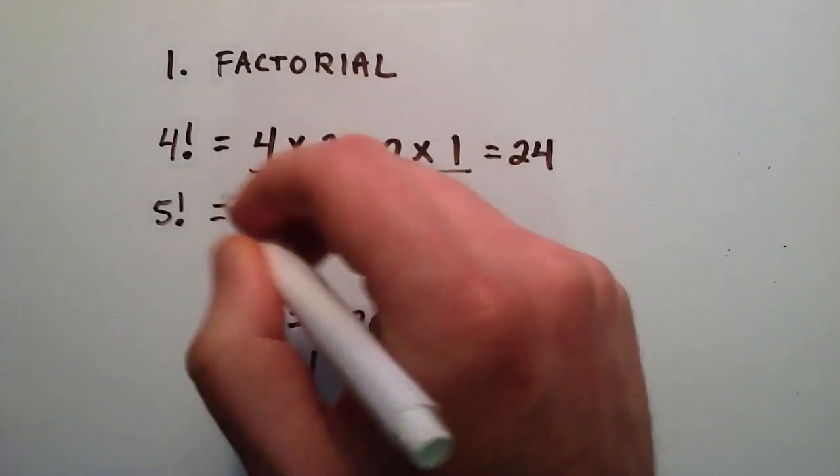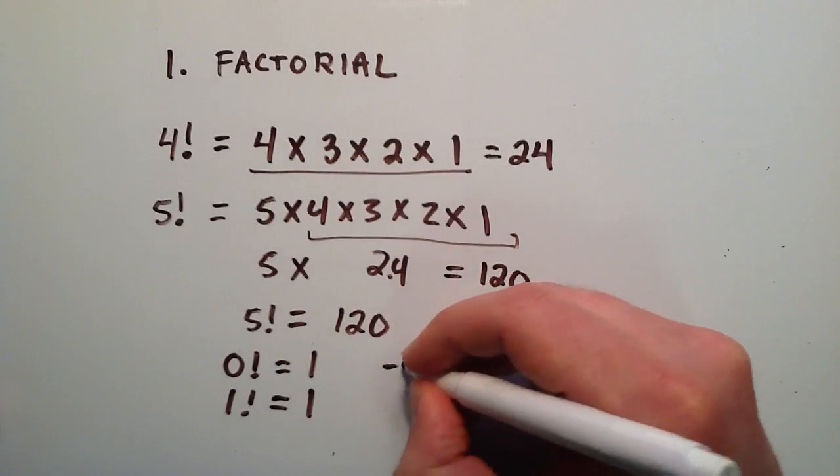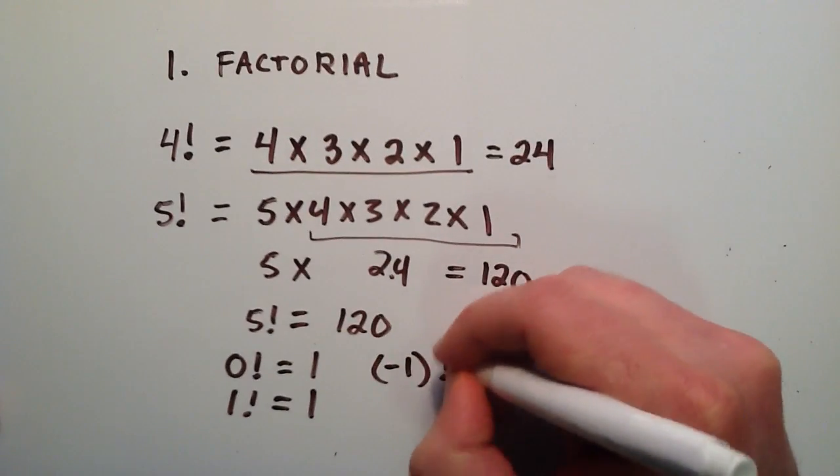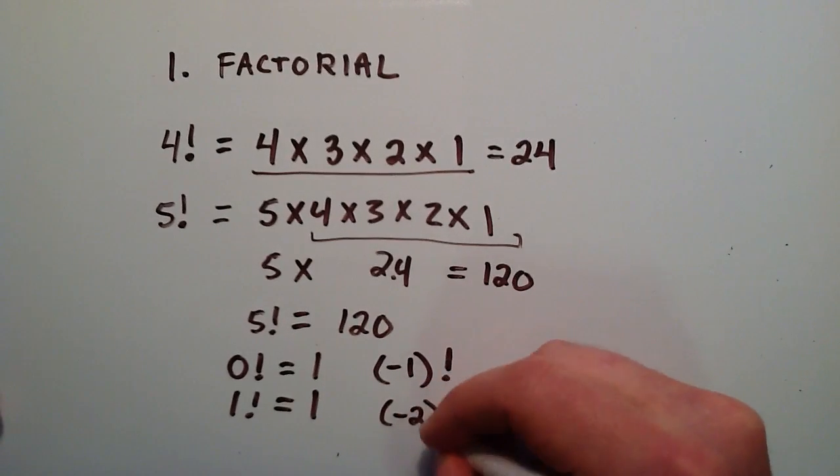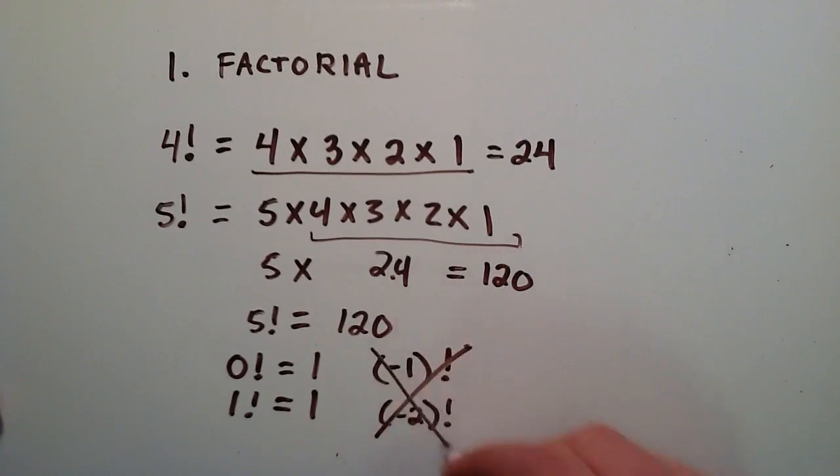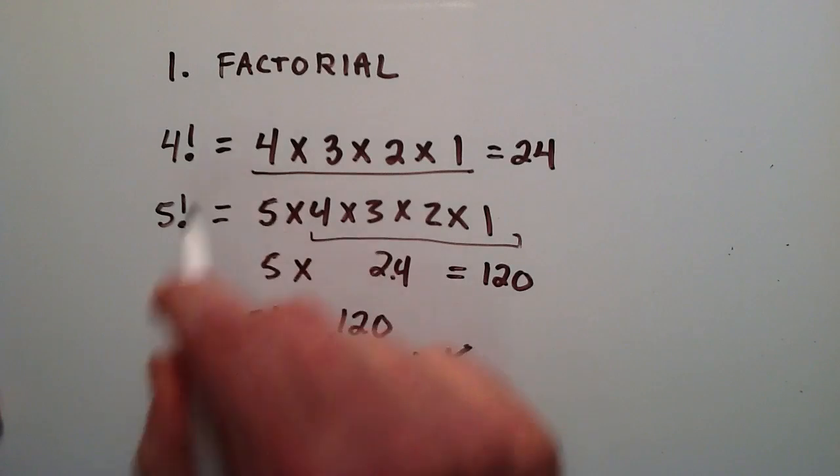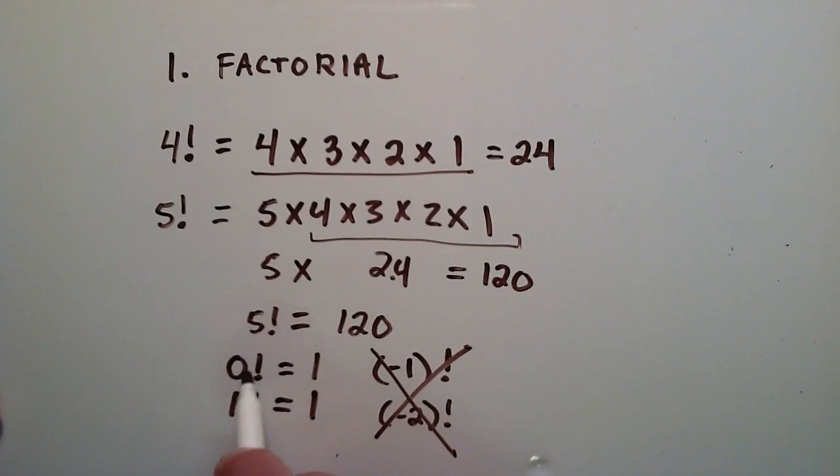And when we're dealing with factorials, we don't take negative factorials. So we don't really have anything to define, let's say, negative 1 factorial or negative 2 factorial. So we're not going to worry about anything like this. So it's always going to be positive numbers. And if it's a 0 factorial or a 1 factorial, it simply equals 1.